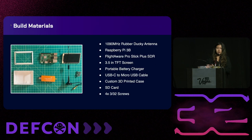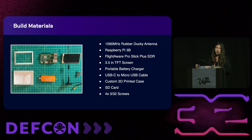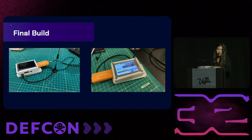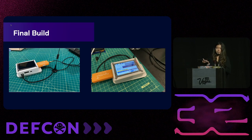Once I had a sufficient ground station running, I wanted to convert it into a portable device that could be stored on the back of an airplane to get more comprehensive data across a wide range of locations. The build used a Raspberry Pi 3B, a custom case enclosure, a TFT display case on top, and a 1090 MHz rubber ducky antenna. The final build had a battery case attached to the bottom, making it fully portable, compact, and durable.